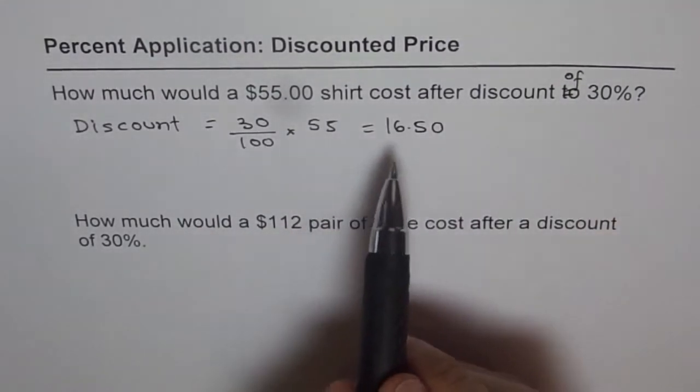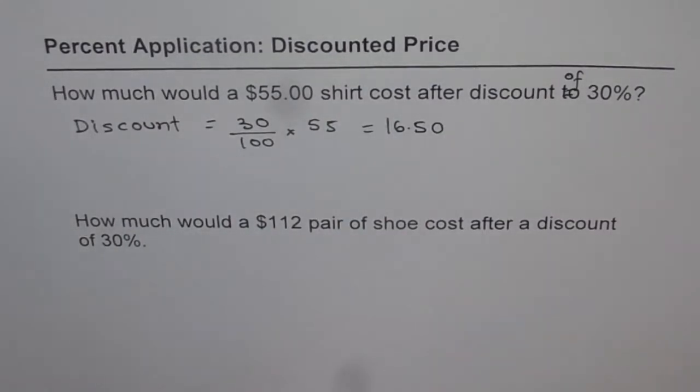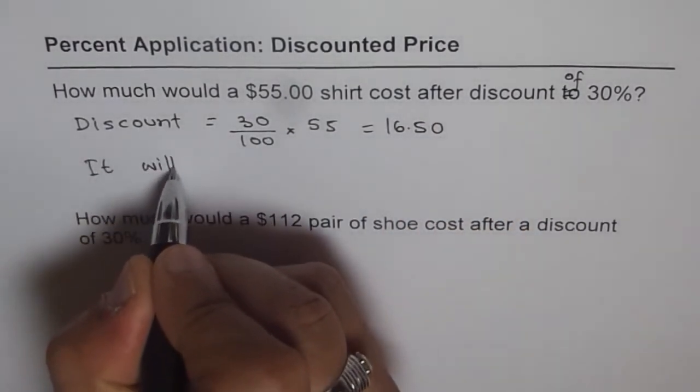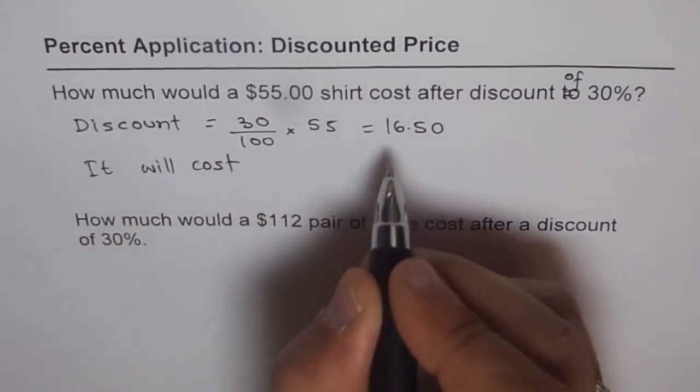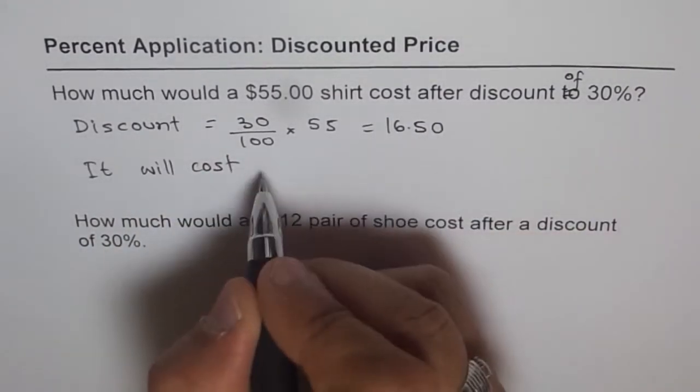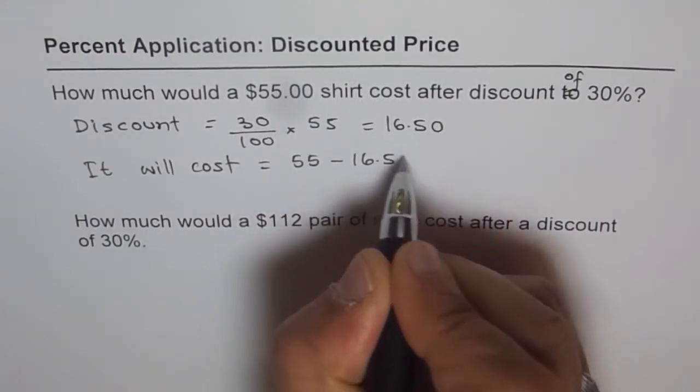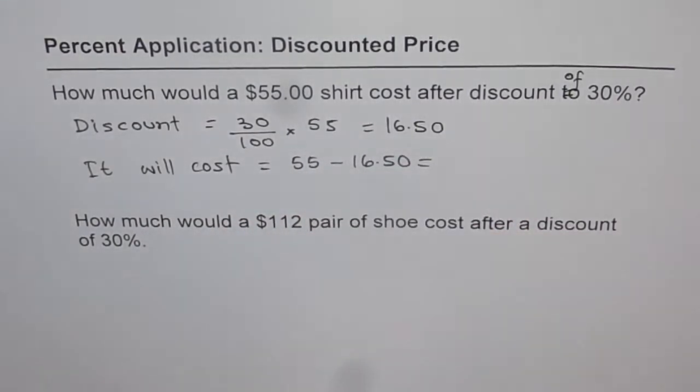That means this much less is to be paid to buy the shirt. How much would this shirt cost after discount? It will cost 16.50 less, so it will cost 55 minus 16.50. That is how you have to do these questions.